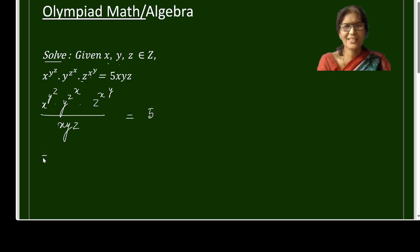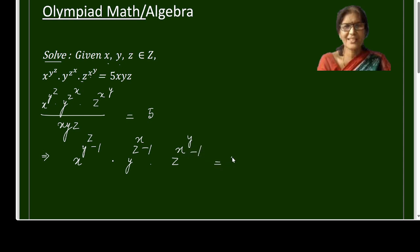Next, taking x together I will get x raised to (y^z − 1), and for y it will be y raised to (z^x − 1), and for z it will be z raised to (x^y − 1), all equal to 5.